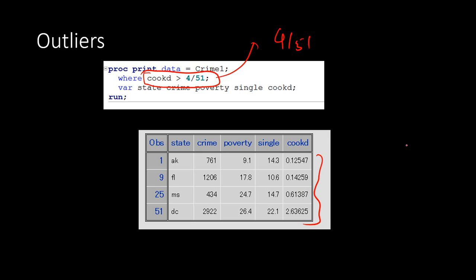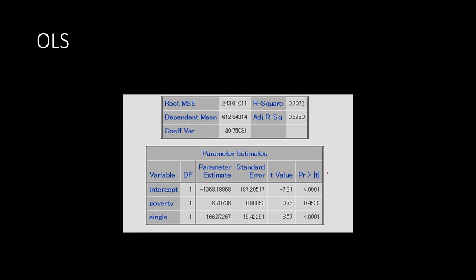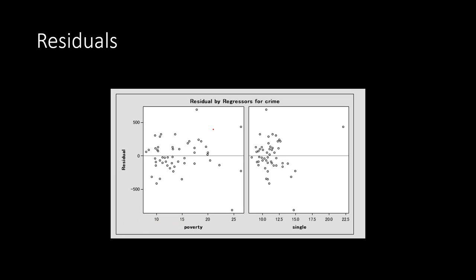Given this is a small sample of 51 observations, it is not good practice to remove those observations and then use OLS — you're better off using robust regression. From the OLS results, we have an R-squared of 70%, only the single-parent variable is significant, and poverty is not significant. Plotting OLS residuals also confirms some residuals are far from the others, confirming the presence of outliers.